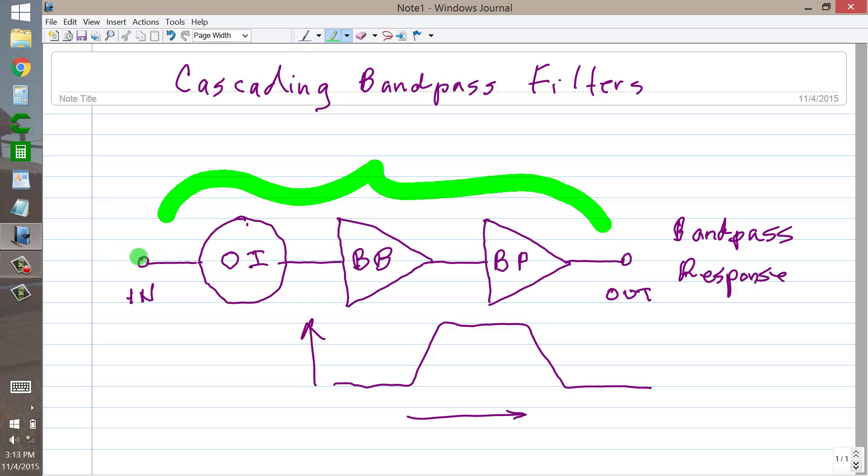So you put a signal into the input here. It hits an opto-isolator which knocks down the amplitude to a very weak level, so it needs amplification through these circuits before it gets to the output. You get a bandpass response at the output, assuming you have a flat audio input with equal amplitudes at all frequencies.